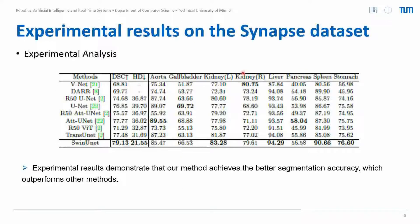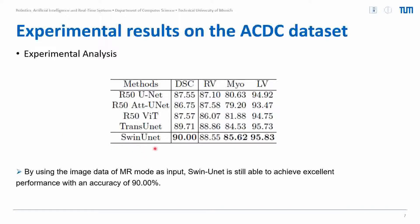Experimental results on the Synapse dataset demonstrate that the proposed SwingUnit achieves better segmentation accuracy, outperforming other methods. By using pre-trained ImageNet model weights, SwingUnit is still able to achieve excellent performance. We also conduct an ablation study on the impact of input size, model scale, and assembly modules.